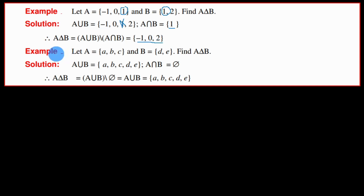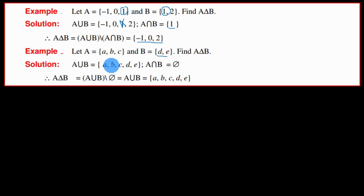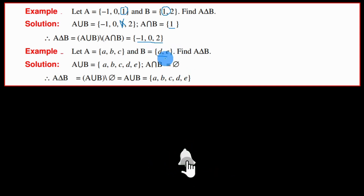Example two: Let set A equal to {a, b, c} and set B equal to {c, d, e}. Find A delta B. A union B is equal to {a, b, c, d, e}. A intersection B has the common elements of both set A and set B — that is {c}. So A intersection B equals {c}. Therefore A delta B equals A union B less A intersection B, which gives {a, b, c, d, e} less {c}, so A delta B equals {a, b, d, e}.